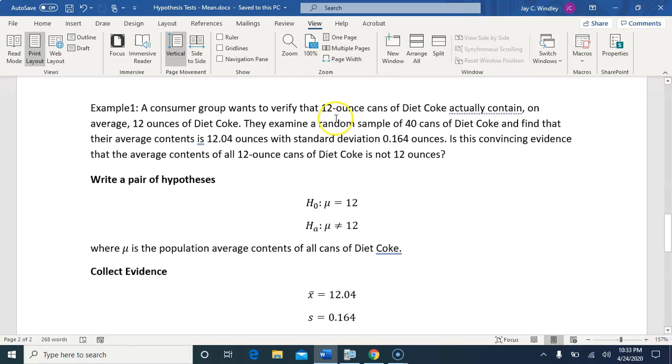So here's an example. Trying to verify that 12-ounce cans of Diet Coke actually contain an average of 12 ounces of Diet Coke. We have a random sample of 40 cans that contains an average of 12.04 ounces, standard deviation 0.164 ounces. Is this convincing evidence that the average contents of all 12-ounce cans of Diet Coke is not 12 ounces?